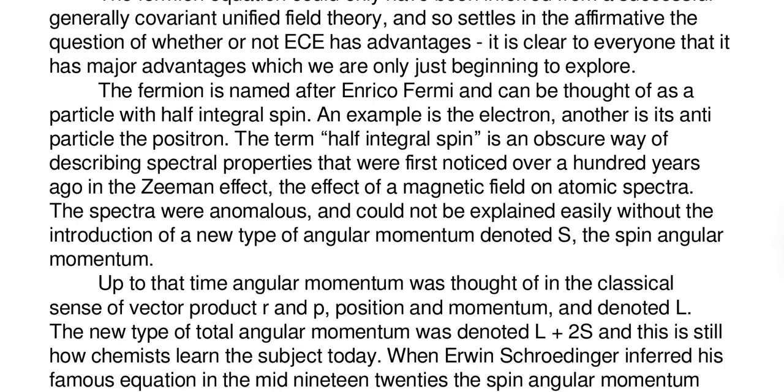The term half-integral spin is an obscure way of describing spectral properties that were first noticed over a hundred years ago in the Zeeman Effect, the effect of a magnetic field on atomic spectra. The spectra were anomalous and could not be explained easily without the introduction of a new type of angular momentum, denoted S, the spin or intrinsic angular momentum.